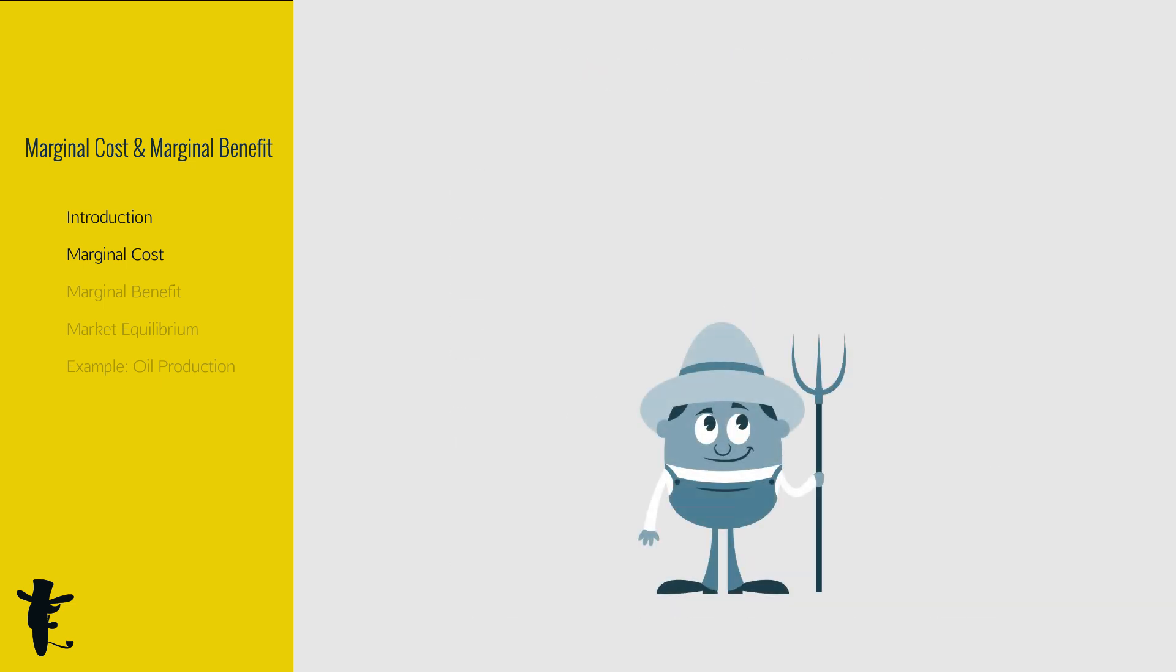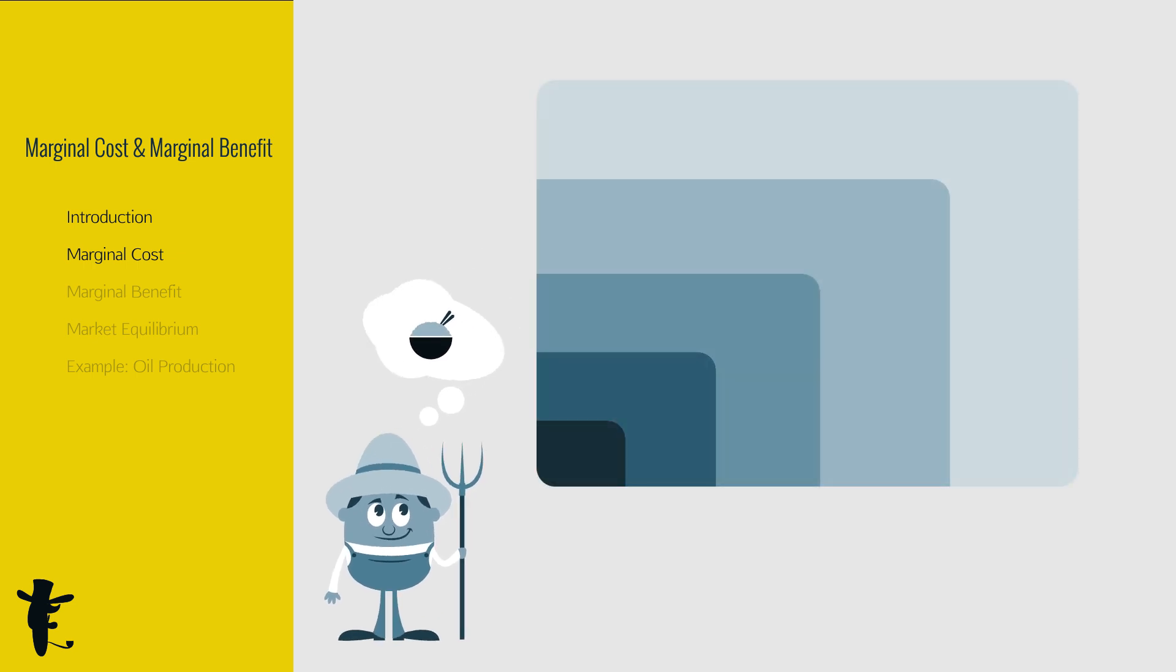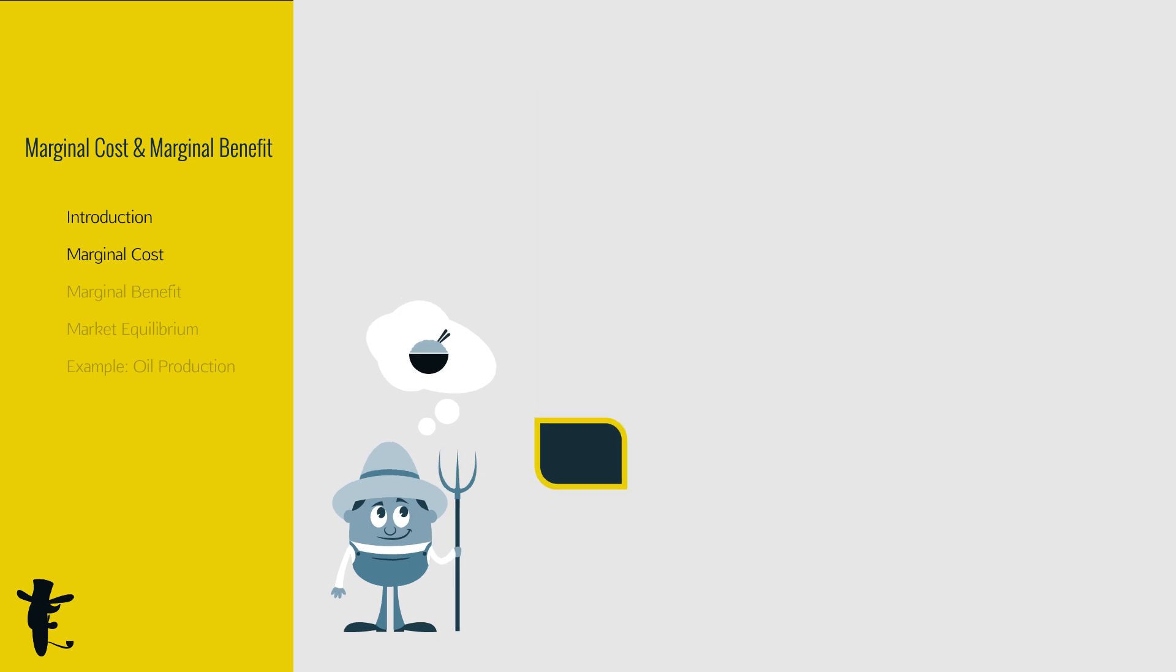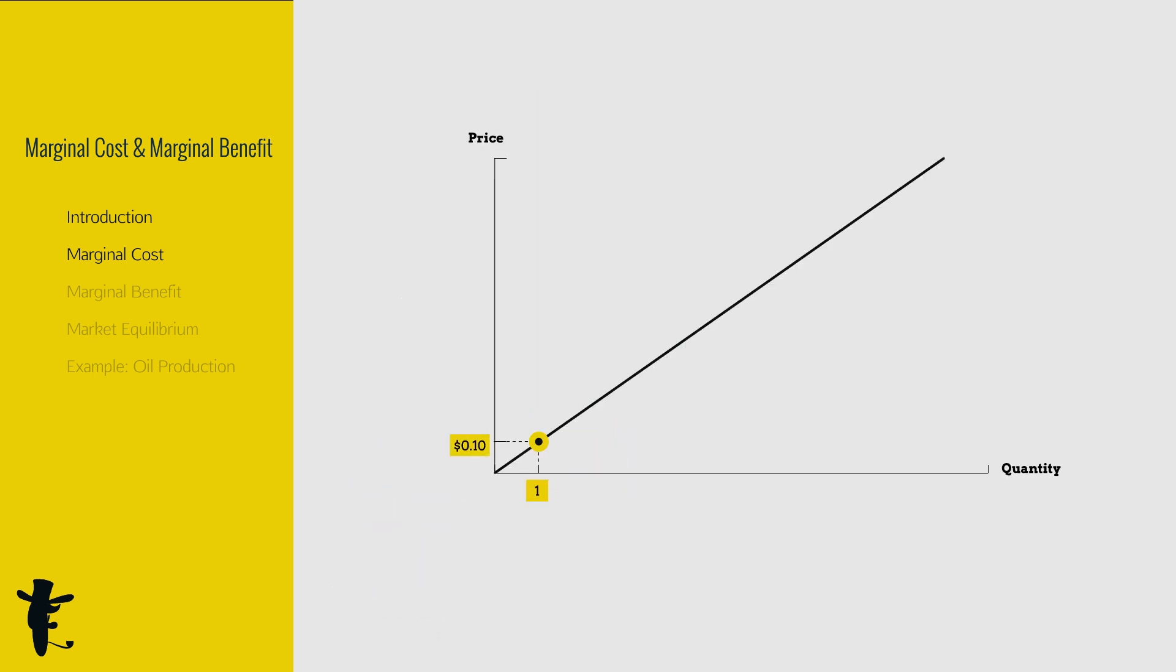An individual marginal cost curve tells us the extra cost a seller incurs to produce one more unit of goods. Let's start with producing one unit of rice. We'll look for the most fertile land. Cool, got it. Cost, 10 cents.